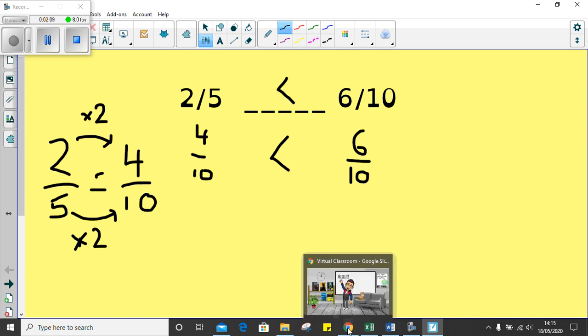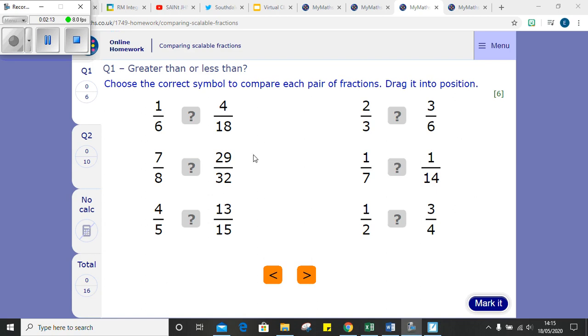The questions you've got today on my maths look a little bit like this. They are asking you to compare these fractions. So comparing one-sixth with four-eighteenths. Remember what I've said, convert the fraction, compare the fraction, and then you're away. So you need to convert sixths to eighteenths for this one, eighths to thirty-twoths, and moving through like that. Then you've got your symbols underneath to move and put in where you think.